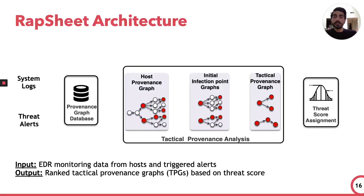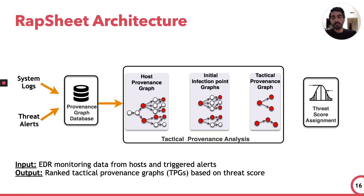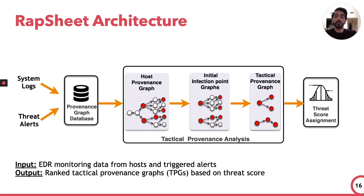Now let's look at how tactical provenance analysis works by first understanding the architecture of the RAPsheet system. There are two inputs to RAPsheet: first, system logs, and second, threat alerts. RAPsheet uses these two inputs to build a provenance graph database, and then upon incident investigation, RAPsheet performs tactical provenance analysis — first generating the provenance graph of the host under investigation, then generating the initial infection point graph, and after that generating the tactical provenance graph. Finally, RAPsheet uses these tactical provenance graphs to assign threat scores and triage threat alerts for investigation.